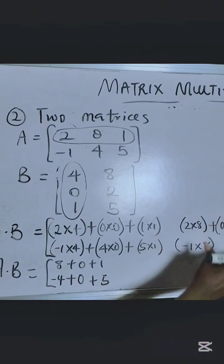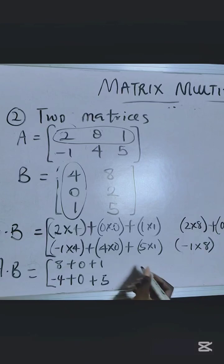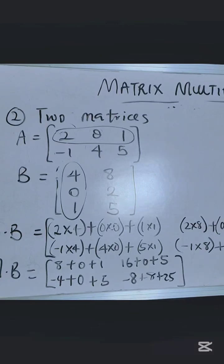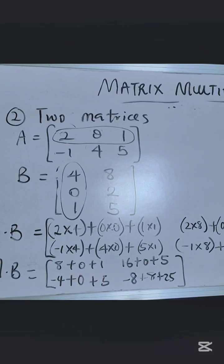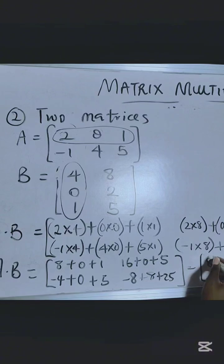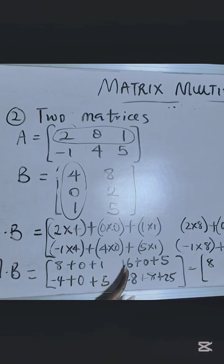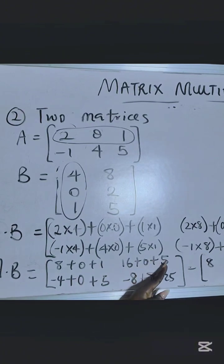We do the same for the second one, and that gives you your answer. So 8 plus 0 plus 1 is 8. 16 plus 0 is 16, plus 5 is 21.